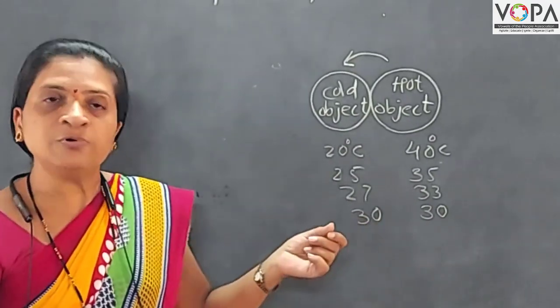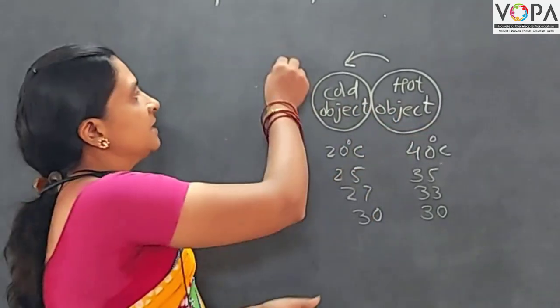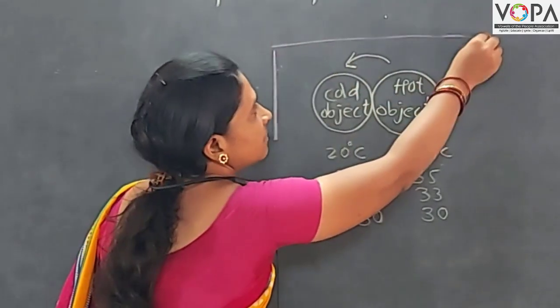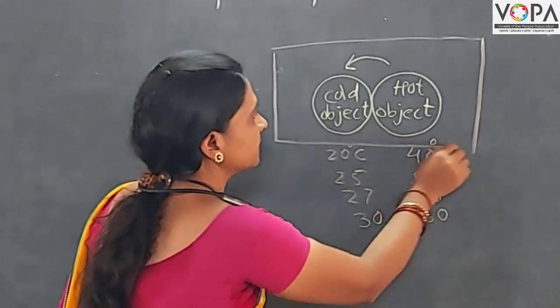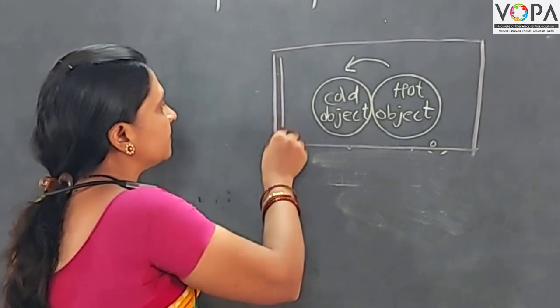And suppose if we take this cold object and hot object in heat resistant material box like this. So there is heat resistant material.